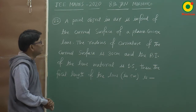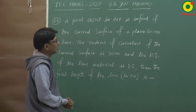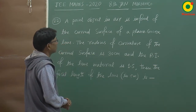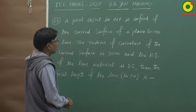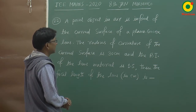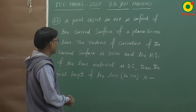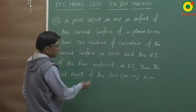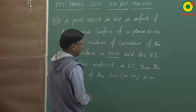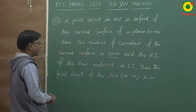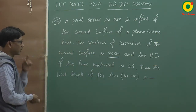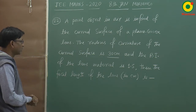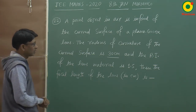A point object in air is in front of the curved surface of a plano-convex lens. The radius of curvature of the curved surface is 30 cm and the refractive index of the lens material is 1.5. Then the focal length of the lens is?